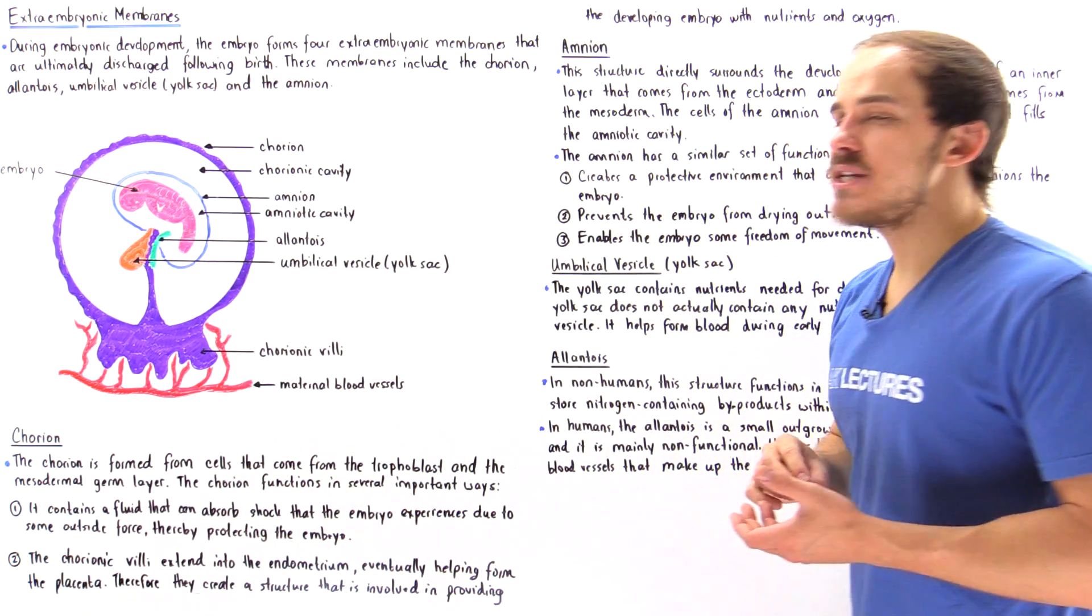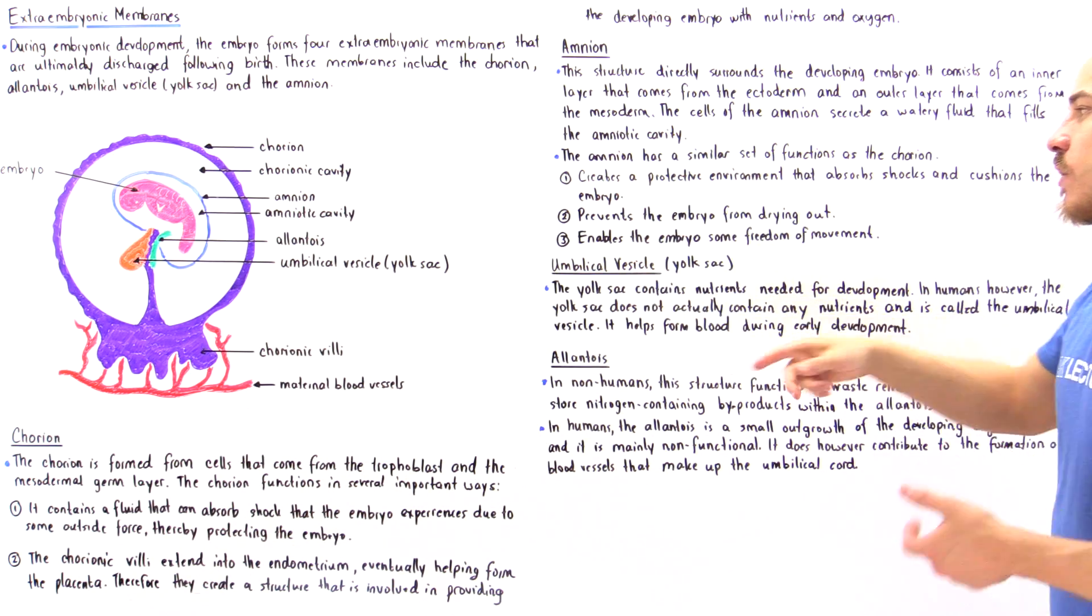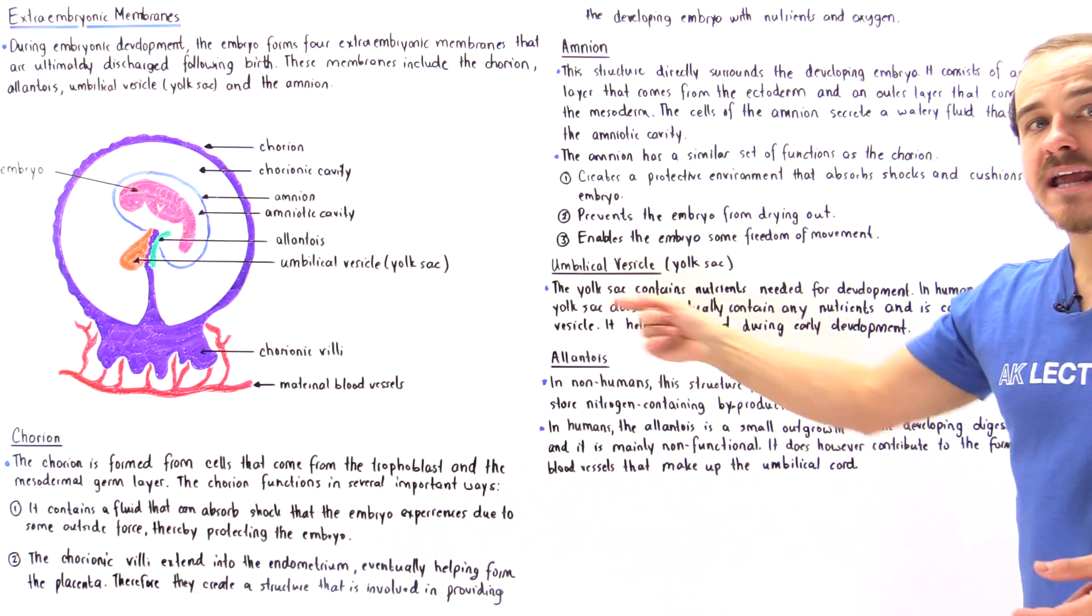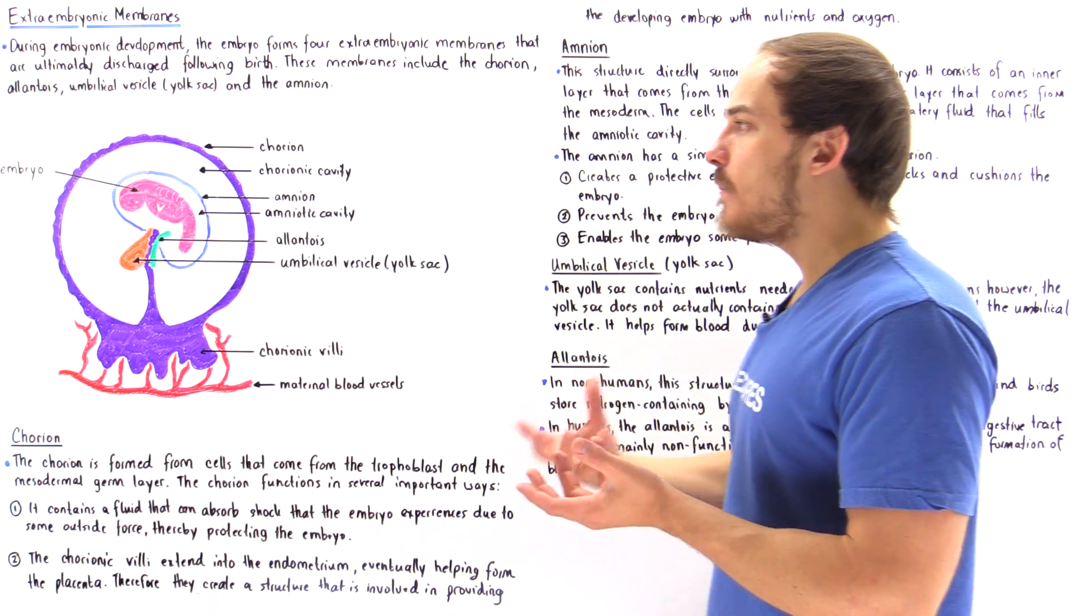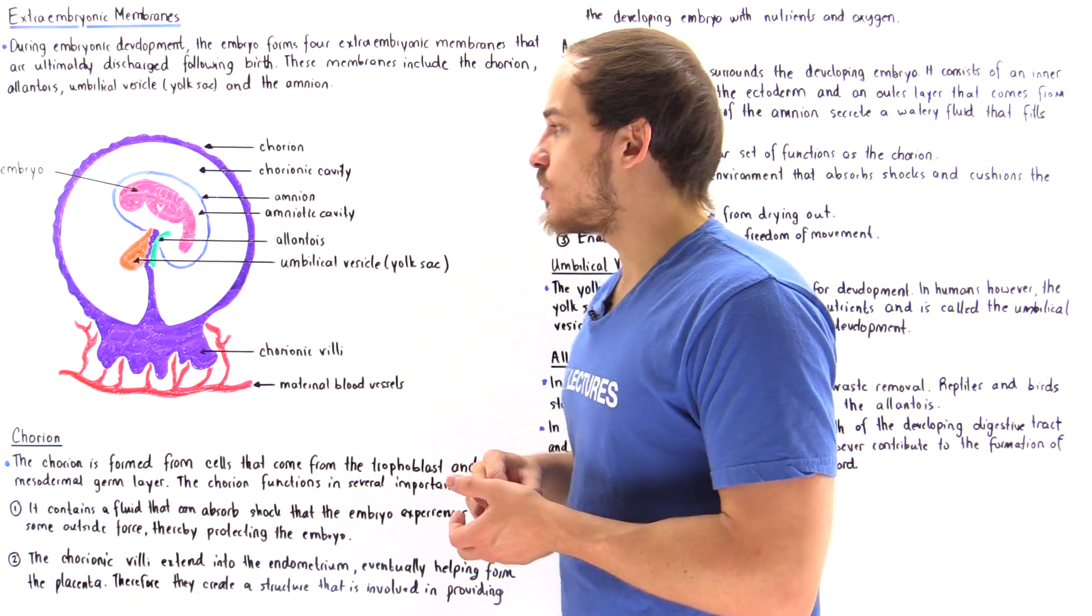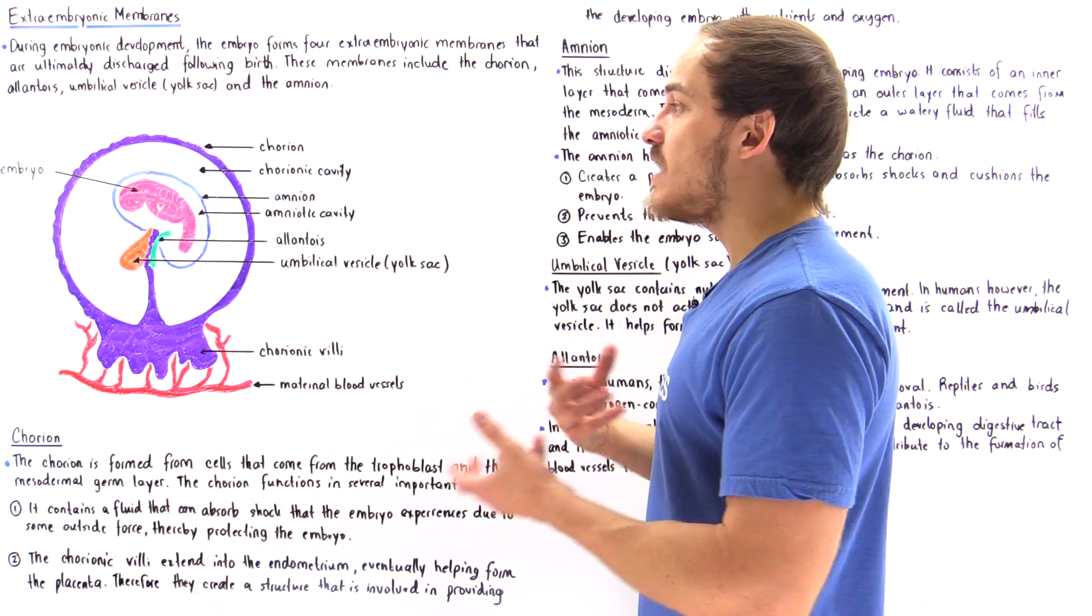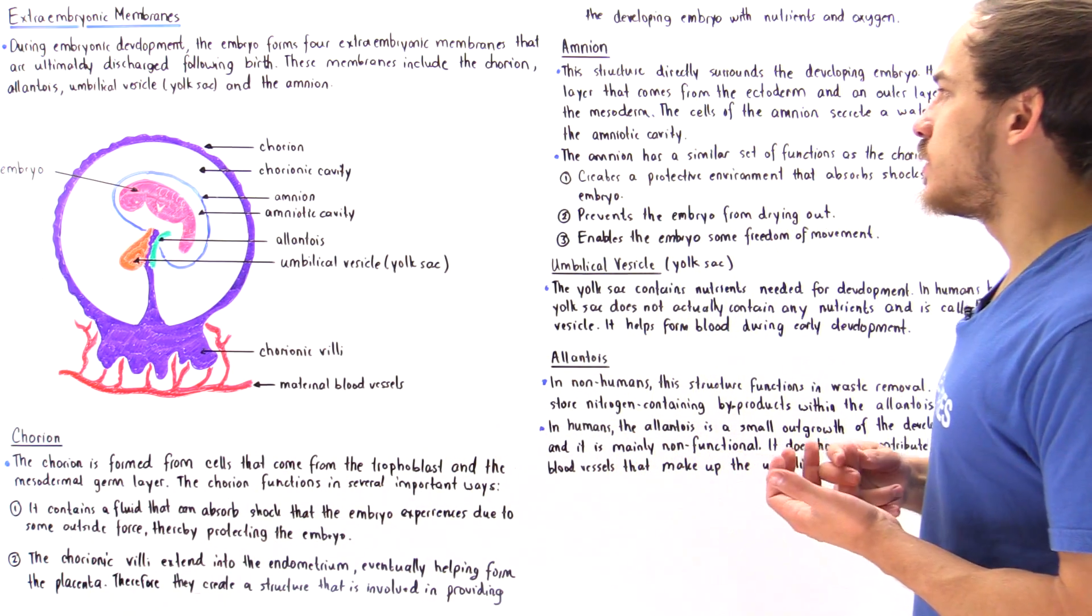But what the amnion also does is it prevents the embryo from drying out and it enables the embryo some freedom of movement. So it allows the embryo to actually move as it grows, and that's important in the process of embryological development.